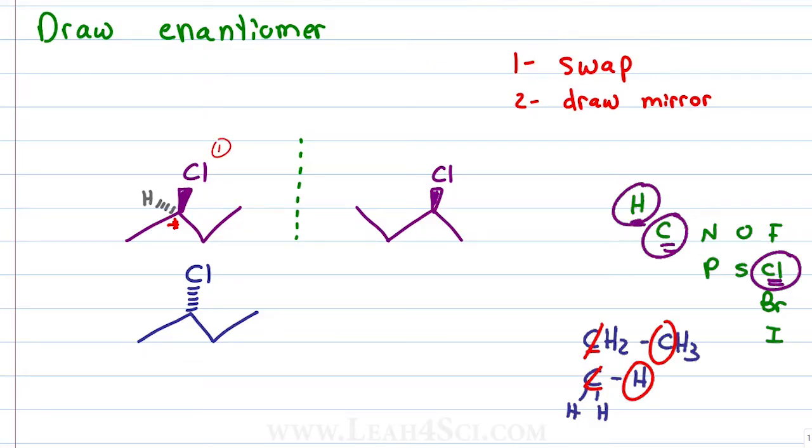Chlorine is priority number 1, ethyl is number 2, methyl 3 and hydrogen in the back is number 4. We cancel out number 4, trace a path from 1 to 2 to 3 giving us a starting molecule with the R configuration.